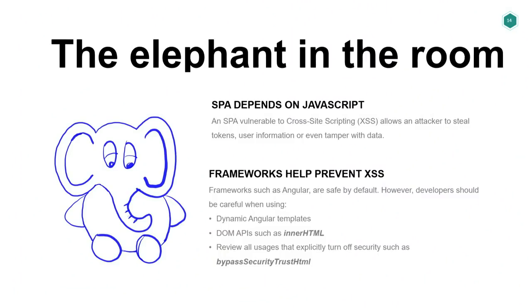As Murali mentioned, we have the elephant in the room. Single-page applications depend heavily on JavaScript. Remember from the architecture — the UI makes JavaScript requests to the back end, you get JSON back, and update the UI. All of this is pure JavaScript. The problem with that is that cross-site scripting becomes the holy grail for an attacker. If you have a cross-site scripting vulnerability in a single-page application that uses token-based authentication, that's game over. Fortunately, we have good allies — frameworks like Angular and React that are safe by default.